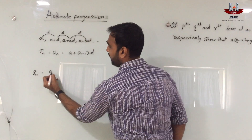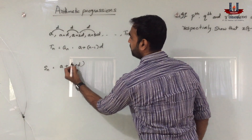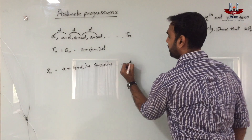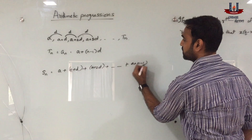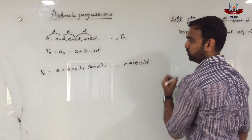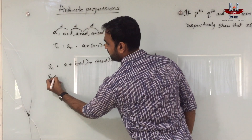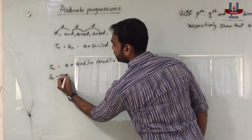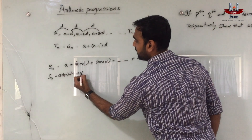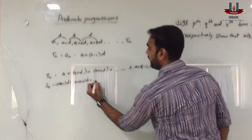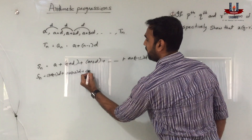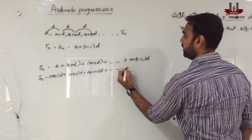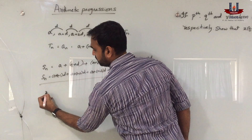Now let's find the sum of the n terms of these sequences. We add a, a plus d, a plus 2d, and so on till a plus (n minus 1) into d. We write the same series in the reverse direction: a plus (n minus 1) into d, plus a plus (n minus 2) into d, and a plus (n minus 3) into d, plus and so on, ending with a.